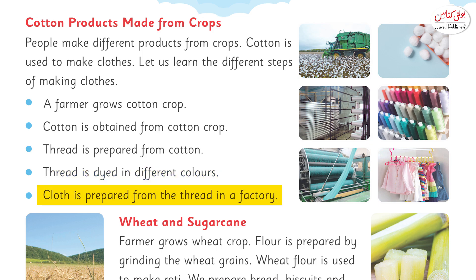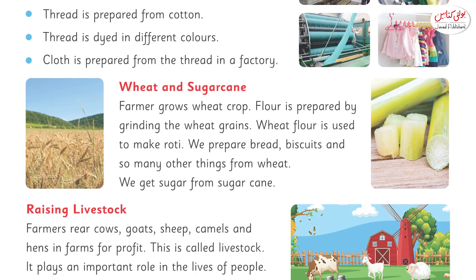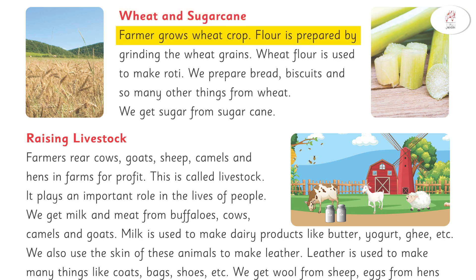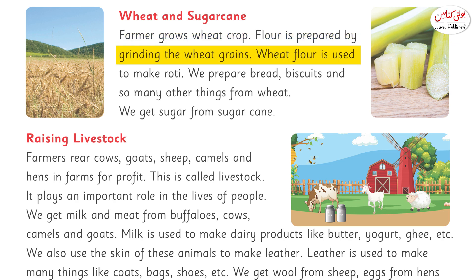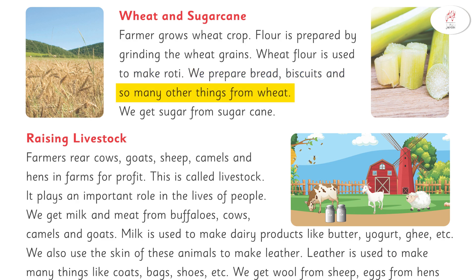Cloth is prepared from the thread in a factory. We prepare bread, biscuits, and so many other things from wheat. We get sugar from sugarcane.